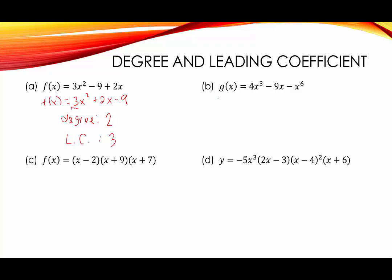In our next example, g(x) is also not in standard form, so let's rewrite it as −x⁶ + 4x³ − 9x. We see the degree — the largest exponent of x — is 6. And the leading coefficient, what's being multiplied to x⁶, is a negative sign, which we can write as negative 1.